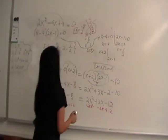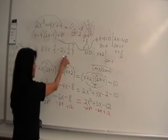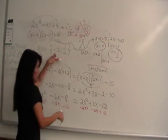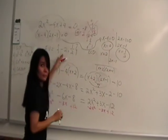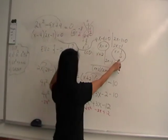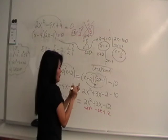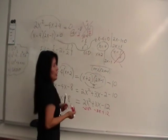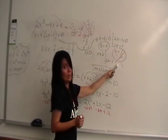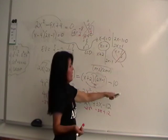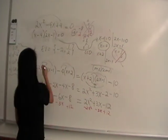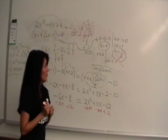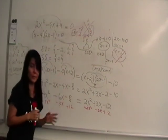Our two answers are 4 and 1/2, but the excluded values were negative 2 and 1/2. Since 1/2 was excluded from the beginning — it would make a denominator zero — we don't want that answer. So the only valid answer is x equals 4. The solution set is just {4}, because we kicked out 1/2 as an excluded value.